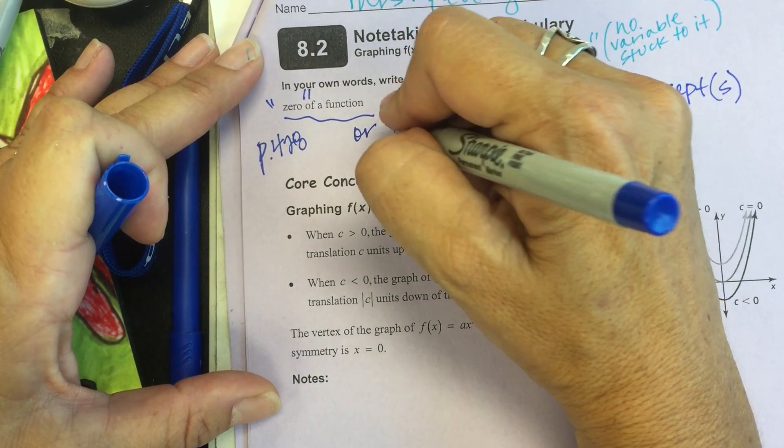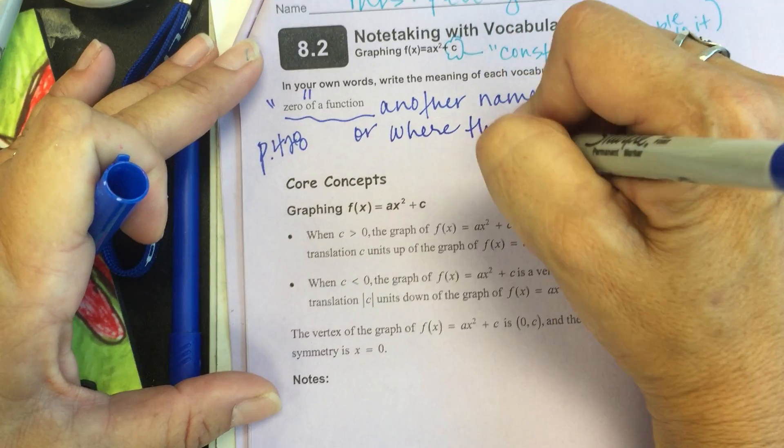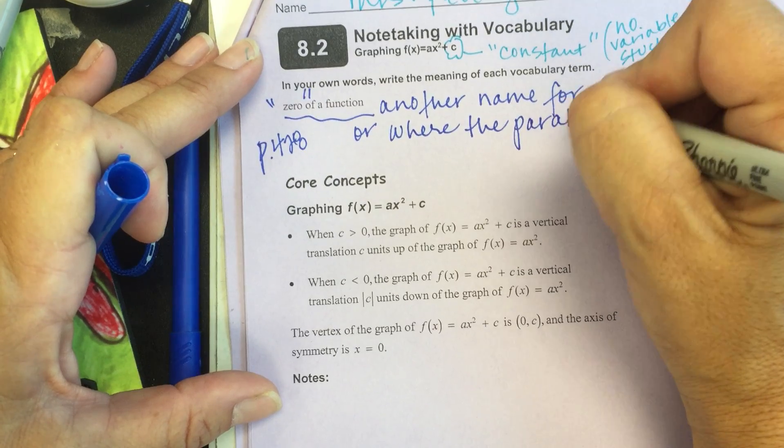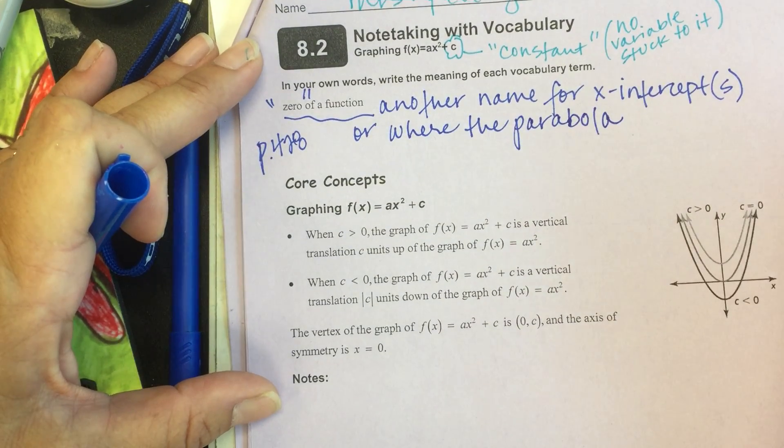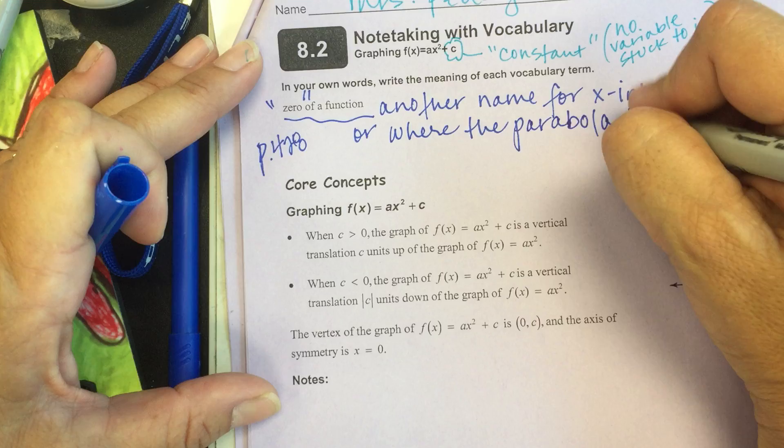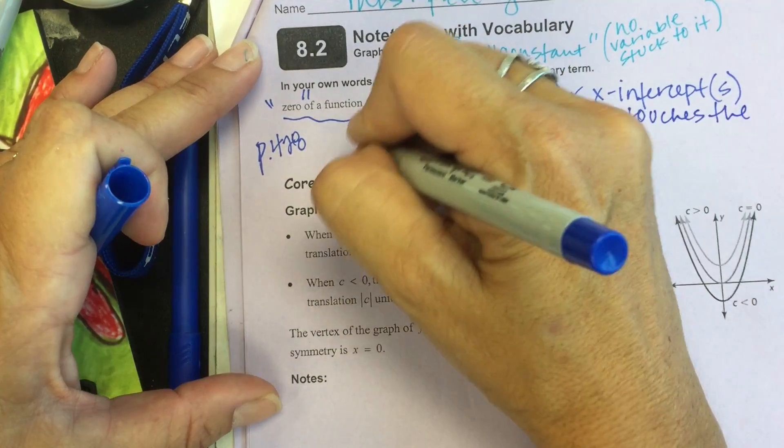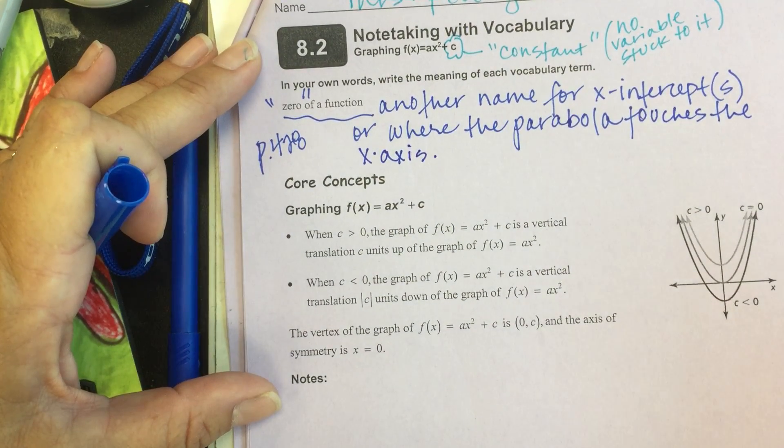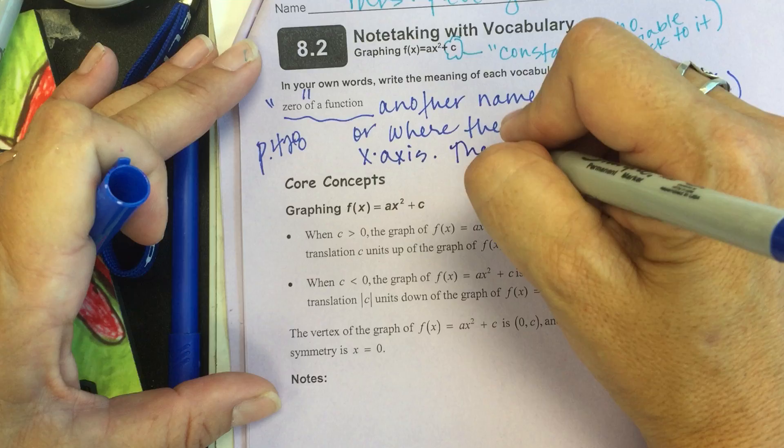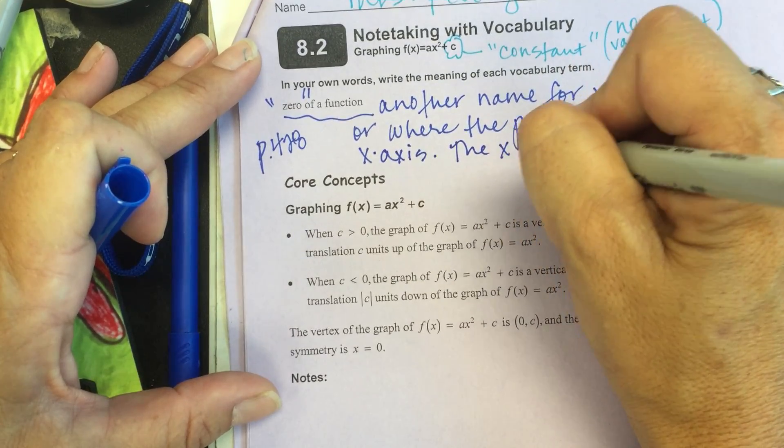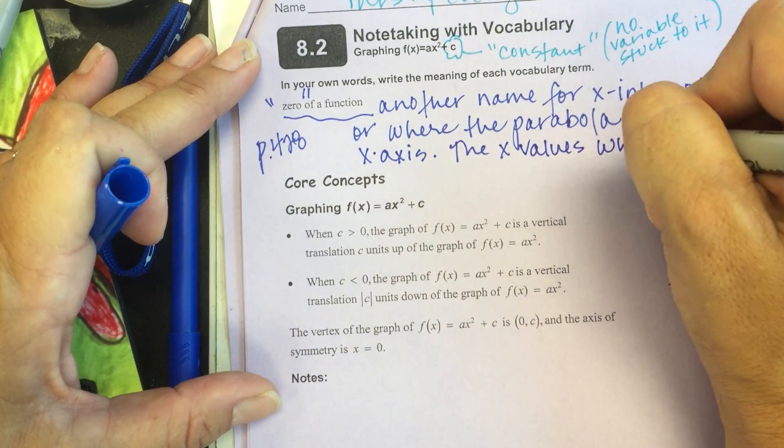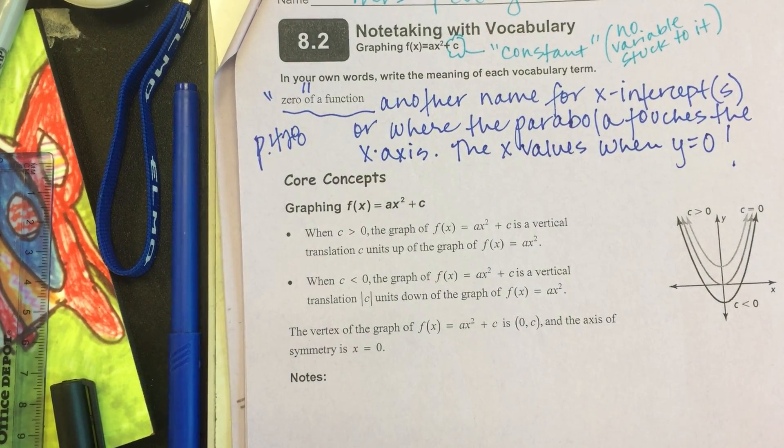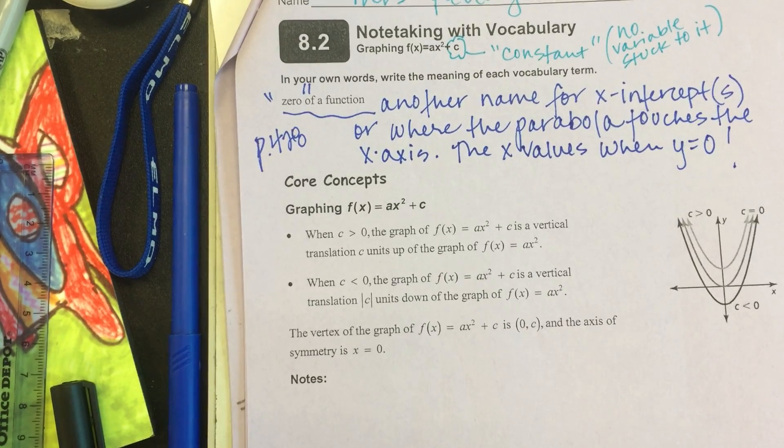A zero of a function is another name for x-intercept, or another way to think about it, where the parabola touches the x-axis. These are the x-values when your y is zero. That's what puts it on the x-axis.